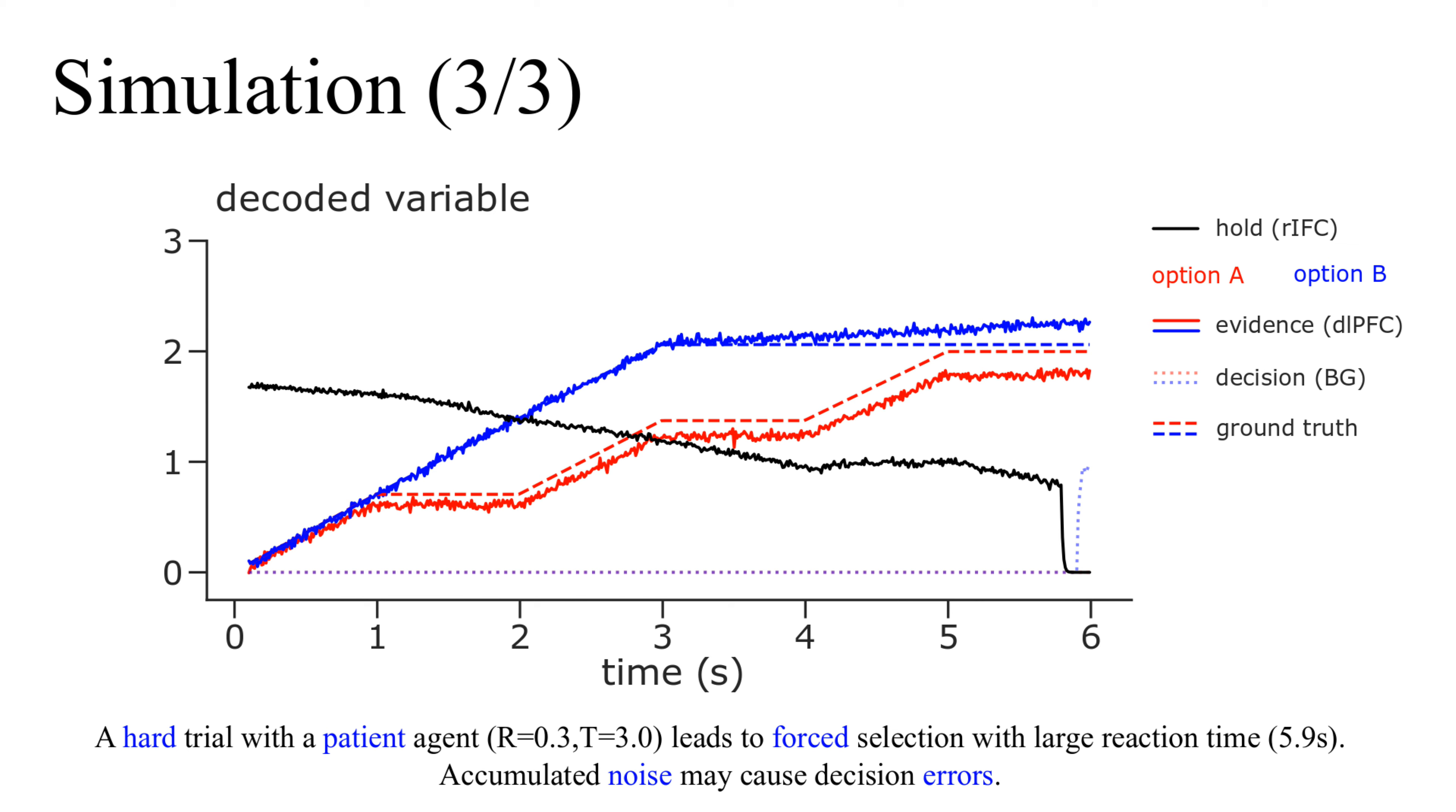By this point, accumulated noise has led to a poor estimate of the total evidence, as can be seen by comparing the solid blue line with the dashed blue line, which represents the externally calculated ground truth of total evidence. This drift frequently causes decision errors, although here the agent guesses correctly.